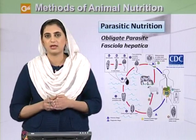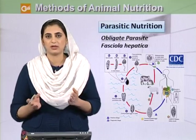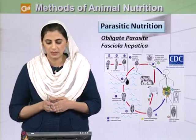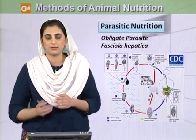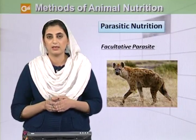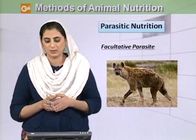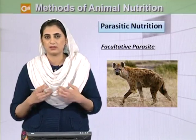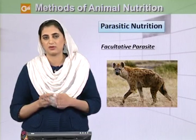Regarding parasitic nutrition, number one is the obligate parasite — those parasites which cannot live without their host organism. An example is Fasciola hepatica, which needs a host for its life cycle to continue. Then we have the facultative parasite, which can live without dependency on a host. For example, hyenas and lions can capture their own prey, but they also steal the prey of other animals, which is why they are called facultative parasites.